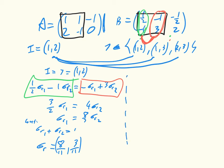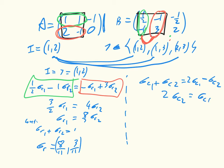Then we do the same for the column player. The equation is σ_c1 + σ_c2 = 2σ_c1 − σ_c2, which simplifies to 2σ_c2 = σ_c1. Combined with σ_c1 + σ_c2 = 1, we get σ_c = (2/3, 1/3, 0).